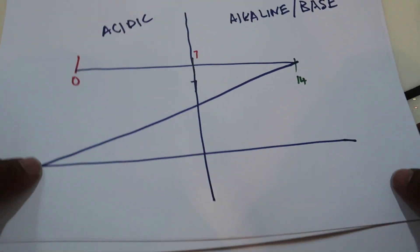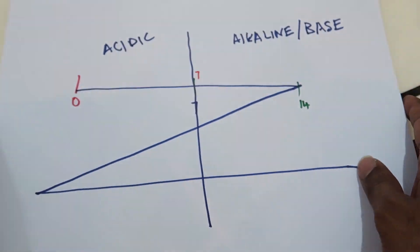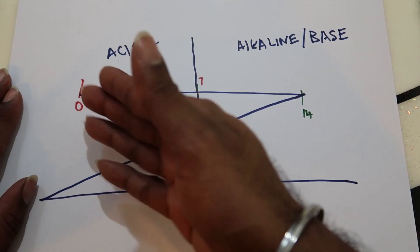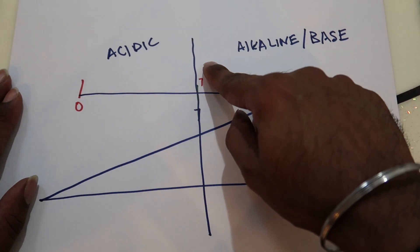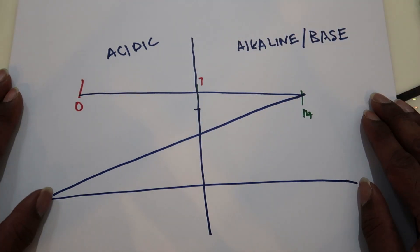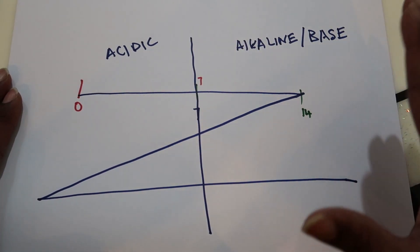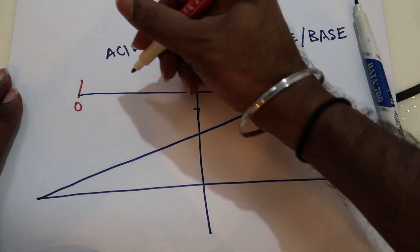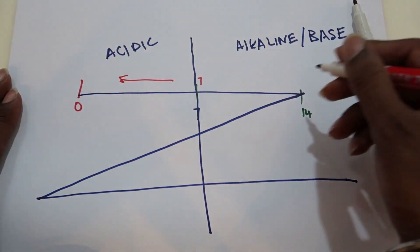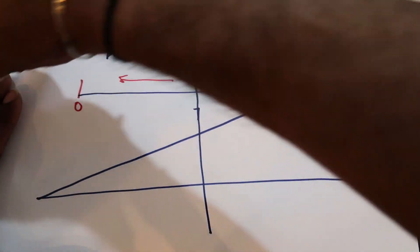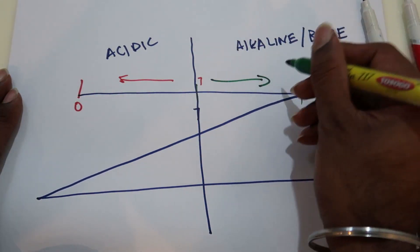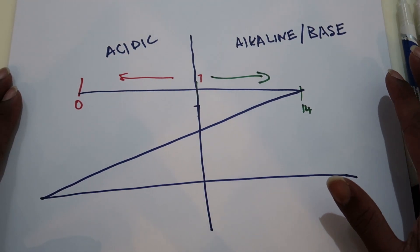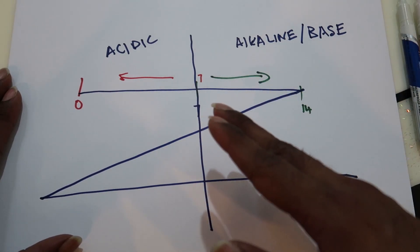What is pH actually? pH starts with an index of 0 to 14. Seven is the neutral point. Whatever numbers you get below 7 is acidic, and whatever numbers you get above 7 is alkaline, or base as they call it.